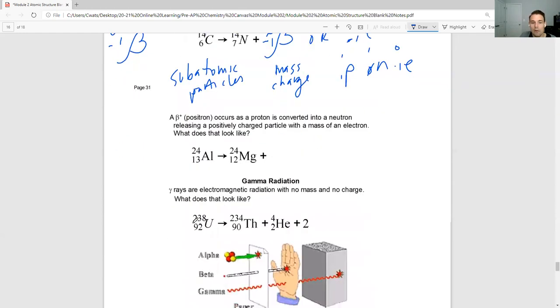For subatomic particles, the top is going to be the mass, the bottom is the charge. For a proton, it's 1, 1. Neutron, 1, 0. Electron, 0, negative 1. So those are your subatomic particles. And we know for elements, the top number is the mass, the bottom number is the atomic number.